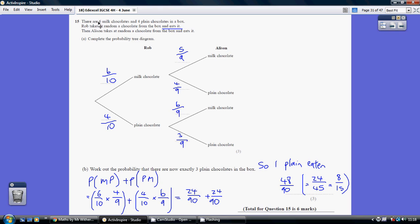Well, there are still 6 milk chocolate sweets there. However, given that Rob's eaten one of the plain chocolate sweets, there are only 3 of those there. So, again, these 2 probabilities add up to a whole.